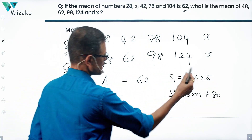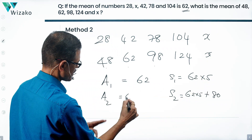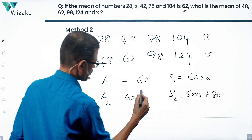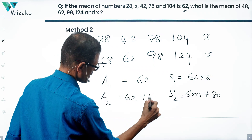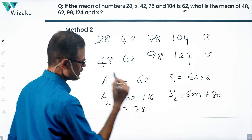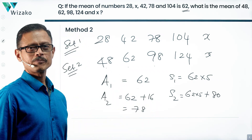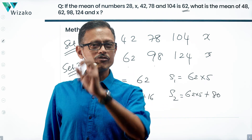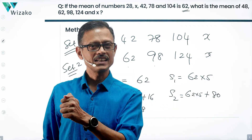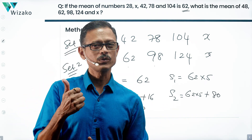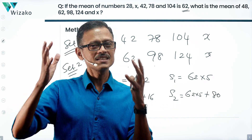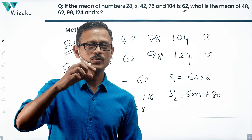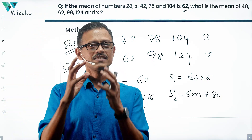So 62 times 5 divided by 5 would have been 62 for the new average. 80 divided by 5 would add another 16 to it. So the new average is going to be equal to 78. The moment you recognize that 4 out of 5 numbers in the second set each has been incremented by 20, the sum gets incremented by 80. Therefore the average goes up by 80 divided by 5.